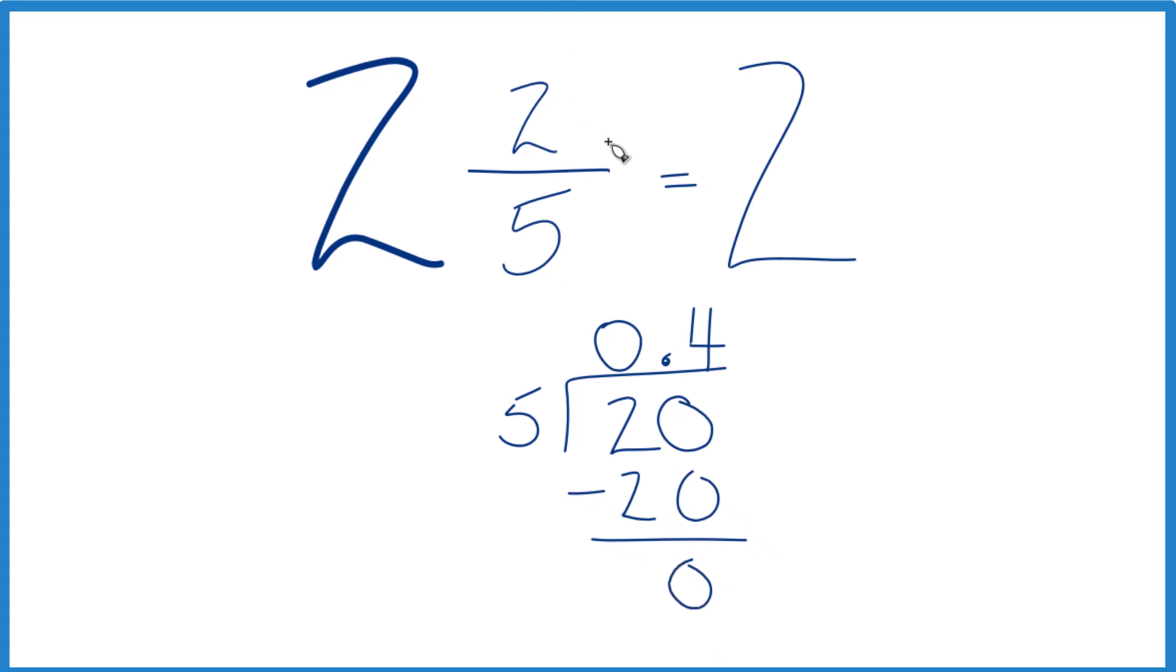So when we convert the fraction 2 fifths to a decimal, we get 0.4. And 2 plus 0.4 gives you 2.4. So in answer to our question, the fraction 2 and 2 fifths is 2.4 as a decimal.